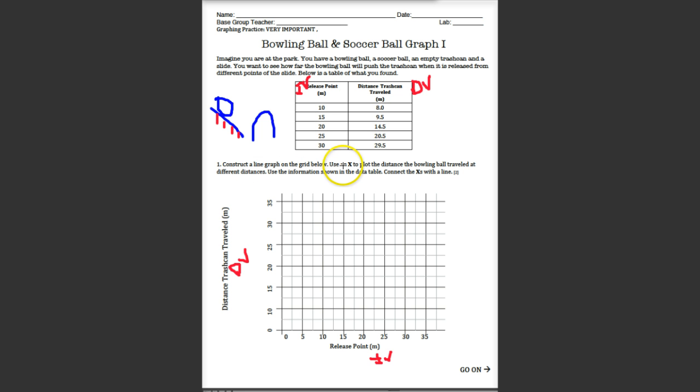Construct a line graph on the grid below. Use an X to plot the distance the bowling ball traveled at different distances. Use the information shown in the data table. Connect the X's with a line. It's really important to use an X instead of a dot because that way we can see it. We do not start at 0,0 at the origin like we do in math because we start with our release point at 10 meters. So we're going to find my release point, 10. I recommend underlining release points. You'll see why later. 10 to 8, so that's just a little bit below.